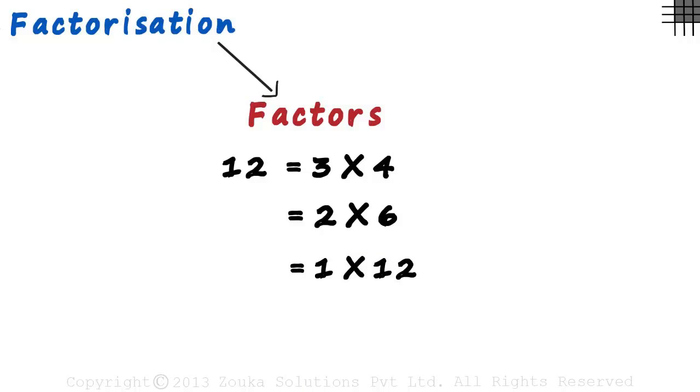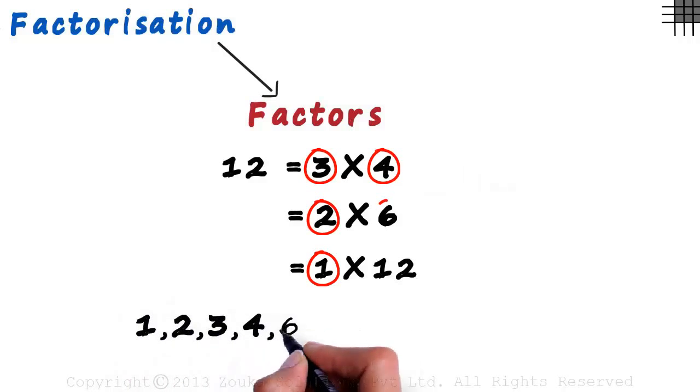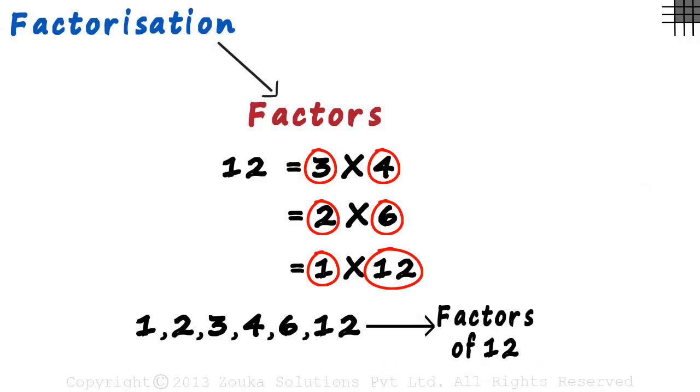There is no other way in which 12 can be written as a product of two positive integers. It means 1, 2, 3, 4, 6, and 12 are the factors of 12.